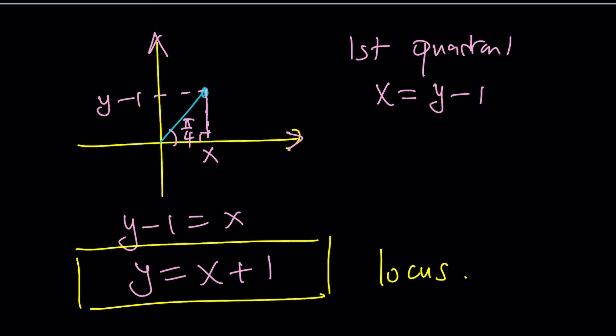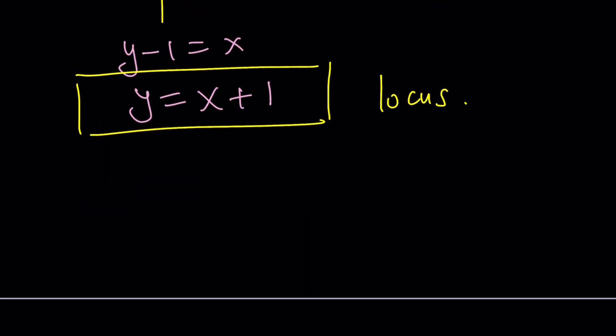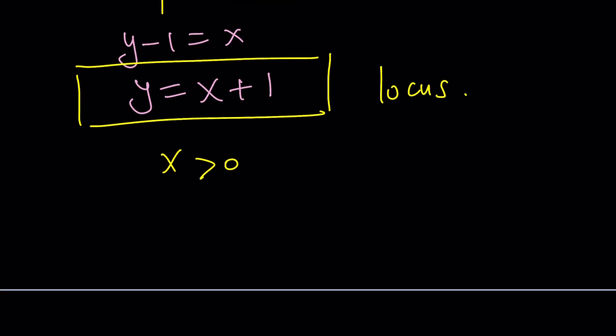But here's the thing. We said that we are in the first quadrant, right? But how is that possible? x needs to be positive, right? And y minus 1 needs to be positive because they're both in the first quadrant. And that implies that y is greater than 1.